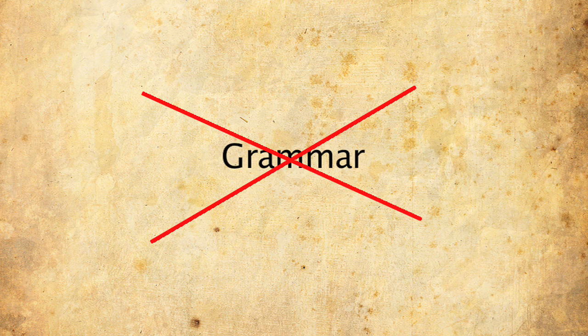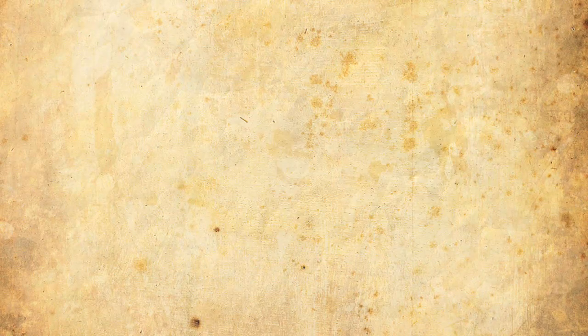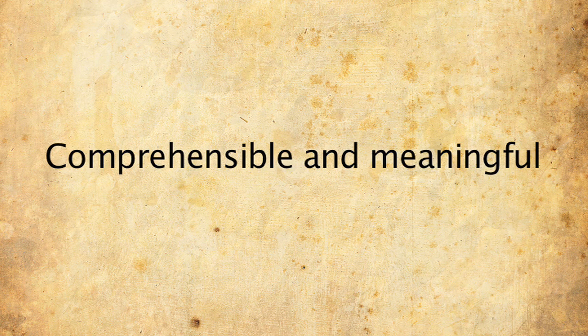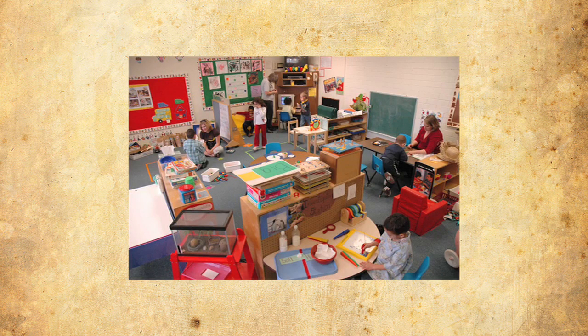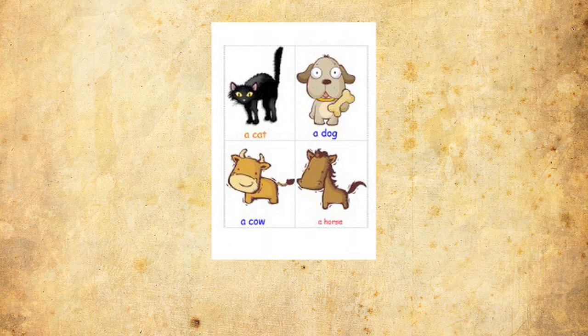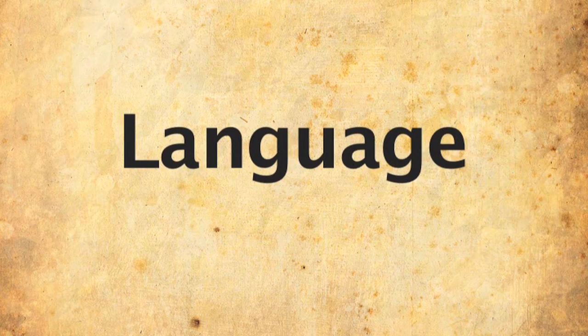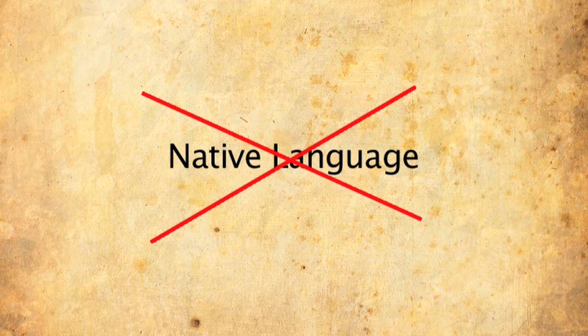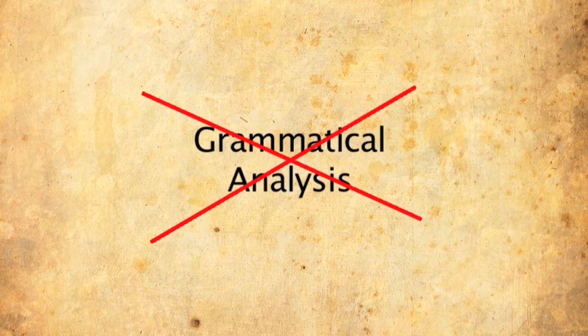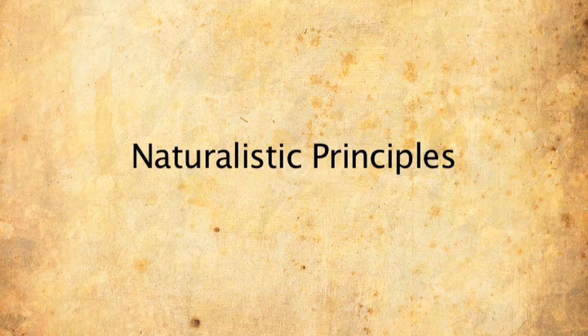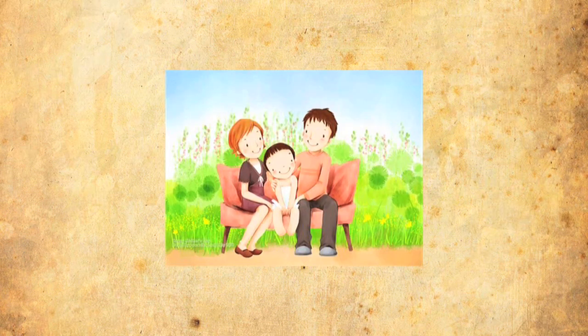The Natural Approach rejects the formal organization of language. It is not based on grammar — it is based on communication. It emphasizes comprehensible and meaningful practice activities rather than production of grammatically perfect sentences. This method appeared in 1983 in a book called The Natural Approach, written by Tracy Terrell and Stephen Krashen. It works based on the use of language in communicative situations without recourse to the native language and without reference to grammatical analysis, based on the principles of naturalistic language learning in young children.